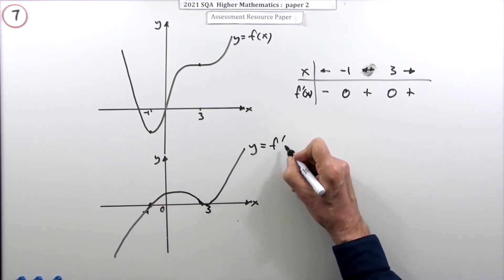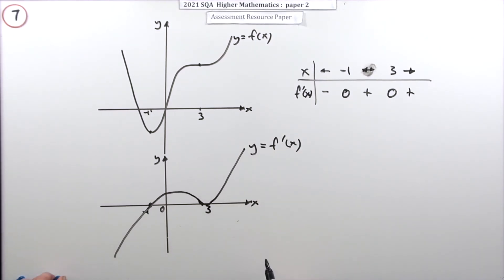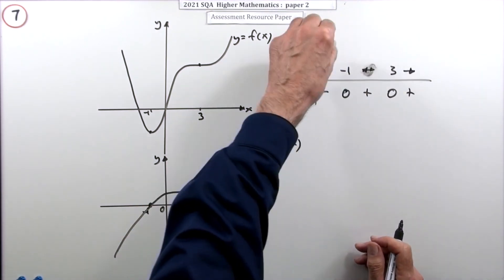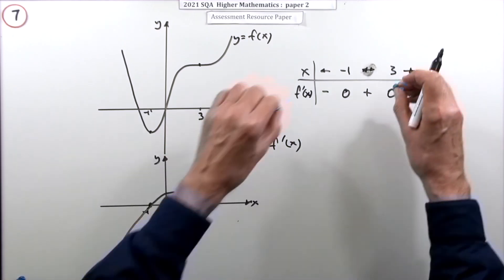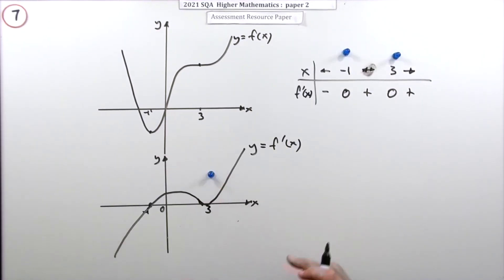So that would be y equals f dash x. So let's see if there's a mark for putting those things in the table or for putting those things there. I think I'll do them for putting them in the table and then getting this graph correct.